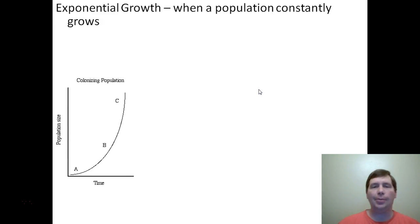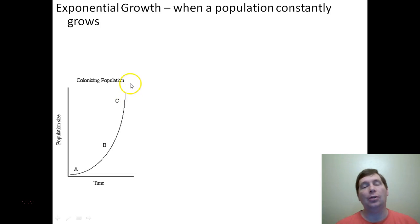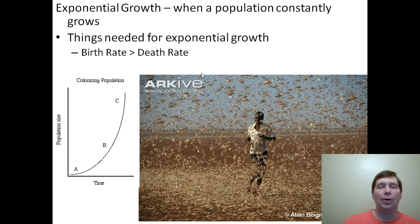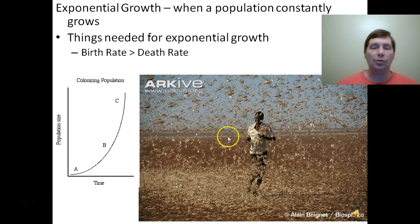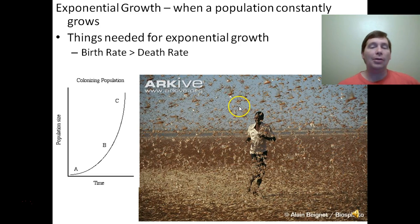Exponential growth happens when a population constantly grows — even by just a small amount, like half a percent. The population may start out growing slowly but if it keeps growing and never goes down, it's just going to take off like a rocket. For exponential growth to occur you need a birth rate that is always higher than your death rate. Here's an example: grasshoppers in Africa had a major locust outbreak. A huge rainstorm made lots of grass grow, lots of food meant the grasshopper population took off — it started small and then exploded.